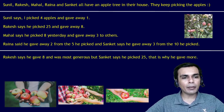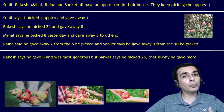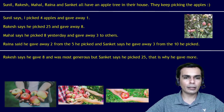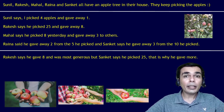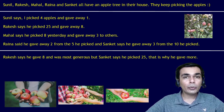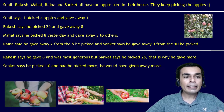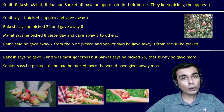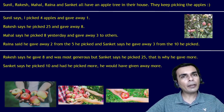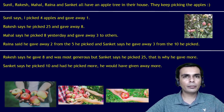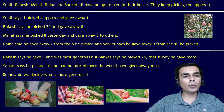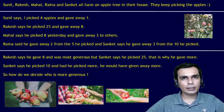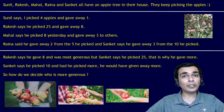Rakesh says he gave away 8 and was the most generous. But Sanket says Rakesh picked 25 which is why he gave more — he picked more so he gave more. Sanket says he picked only 10 and had he picked more, he would have given more too. So how do we decide who is more generous? How do we decide who has a larger heart to give away more apples?